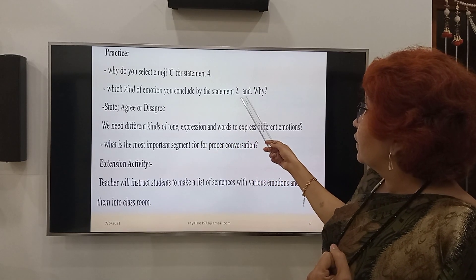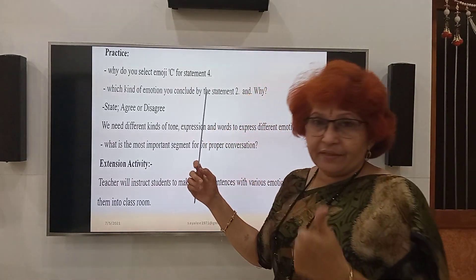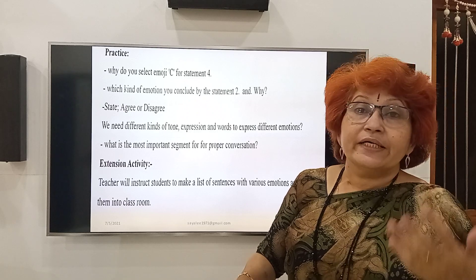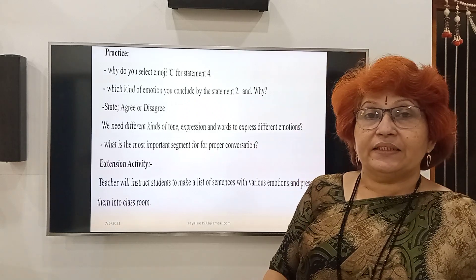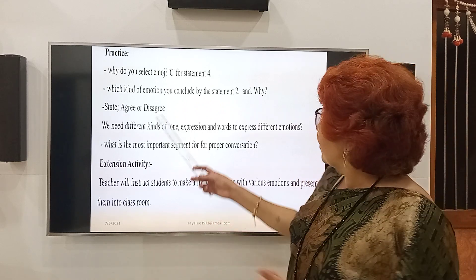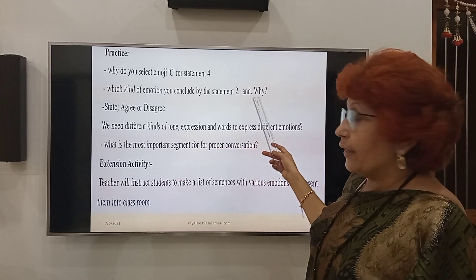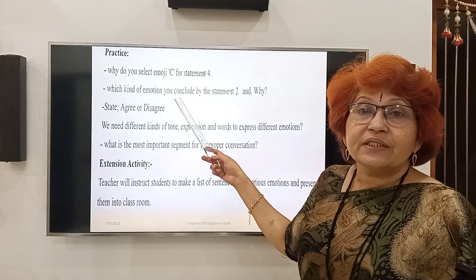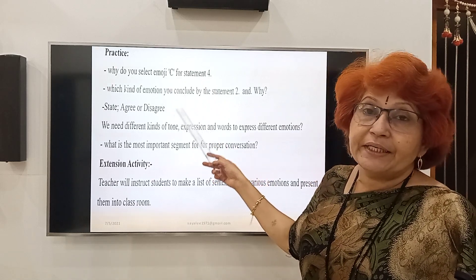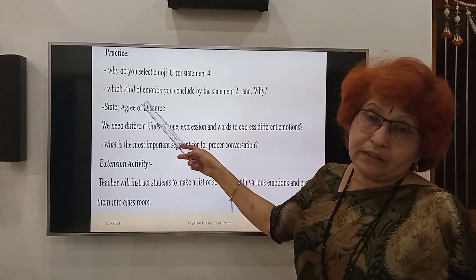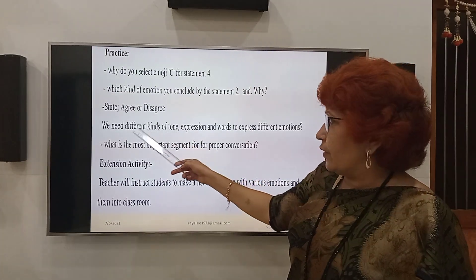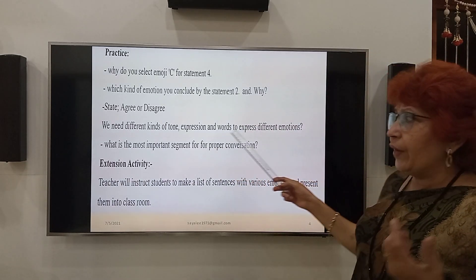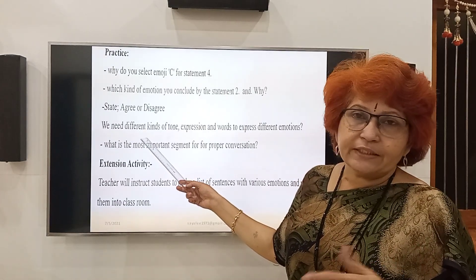Which kind of emotion do you conclude by statement two, and why? Statement two is: 'Great. Nice work you have done.' This is a kind of patting — admiring, praising somebody else's success. That's why that sentence is exclaimed by the speaker. Now, state agree or disagree: we need different kinds of tone, expression, and words to express different emotions. Are you agree with this sentence? I am agree. This is correct.